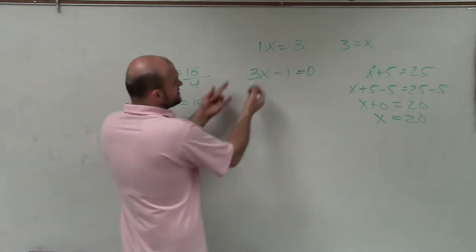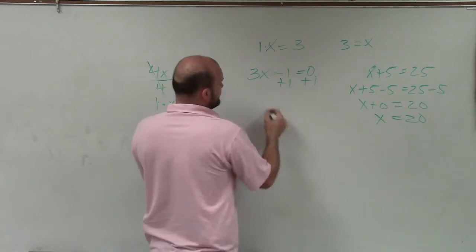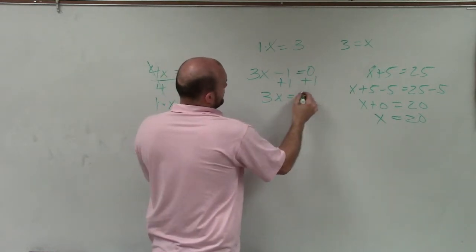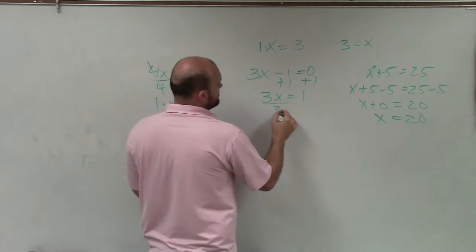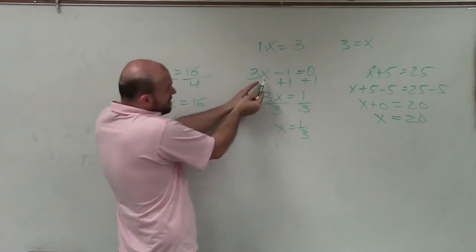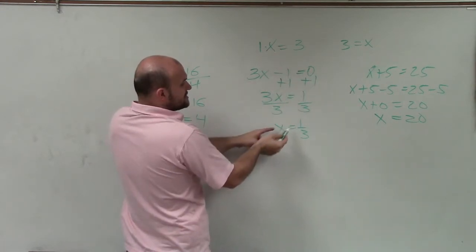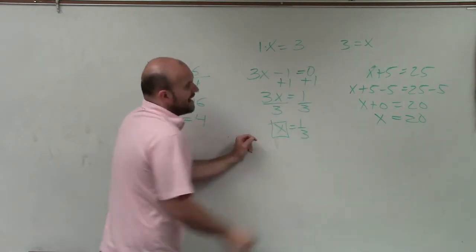And now you can see I have two operations I need to undo. Well, we always undo addition and subtraction first. Then we undo multiplication by dividing. And x equals 1 third. So you can see from having a variable with a lot of friends, I undid operations until I got the variable by itself.